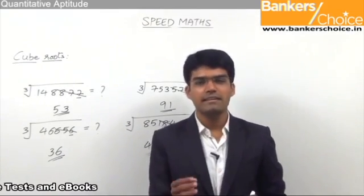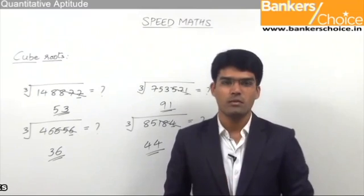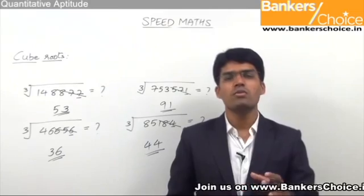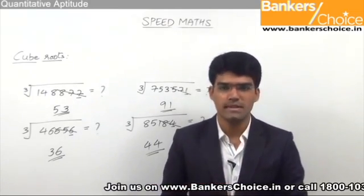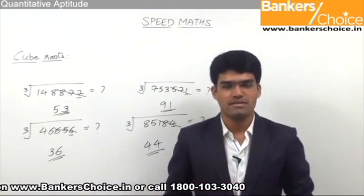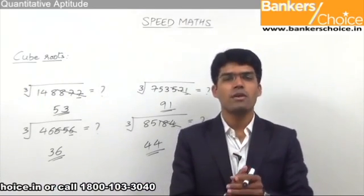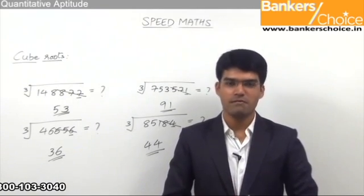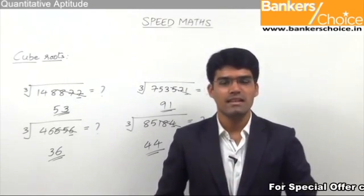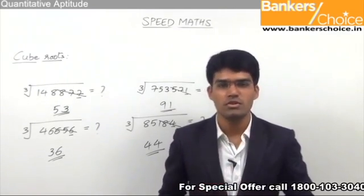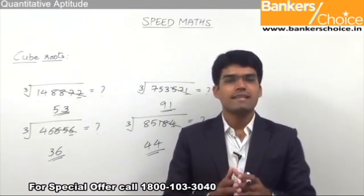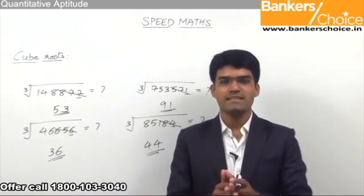As you can see, it hardly takes two seconds to find the cube root of a given number. Remember, this method is applicable only for perfect cubes. Finding square roots and cube roots of imperfect squares and imperfect cubes will be covered in the topic of approximations. For now, practice finding square roots and cube roots of perfect squares and perfect cubes. That's all from this session of speed maths — simply knowing the techniques is not enough; make sure you practice well and apply them at the right time. See you in the next session. Thank you.